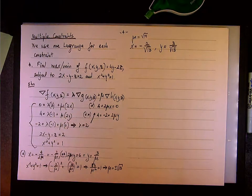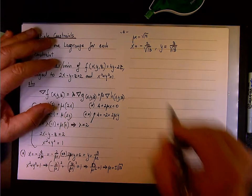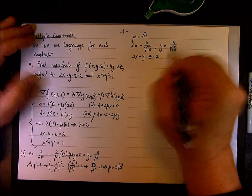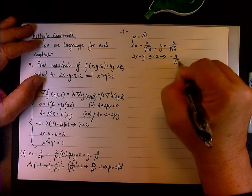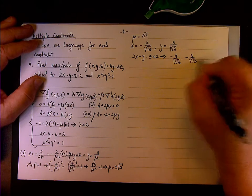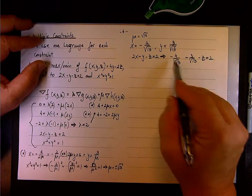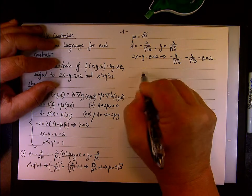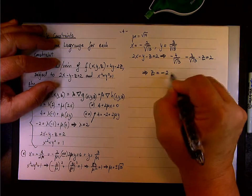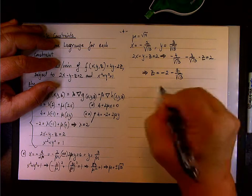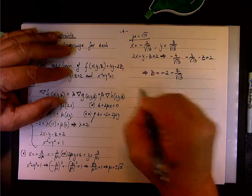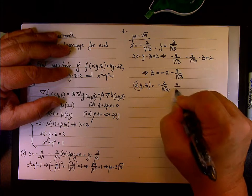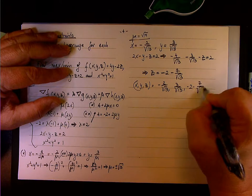Now we use the first constraint to find z. With 2x minus y minus z equals 2, substituting gives negative 4 over square root of 13 minus 3 over square root of 13 minus z equals 2. So z equals negative 2 minus 7 over square root of 13. The first solution is (x, y, z) = (negative 2 over √13, 3 over √13, negative 2 minus 7 over √13).